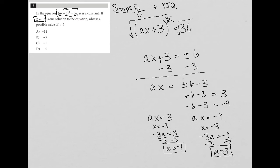So those are my two possible a values. When I go up to my answer choices, I see that the only one listed is -1. Therefore, that must be the correct answer.